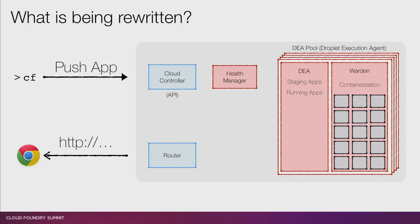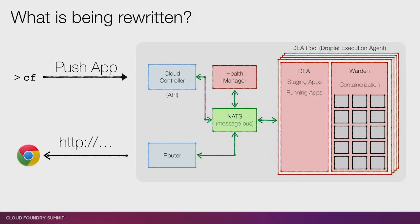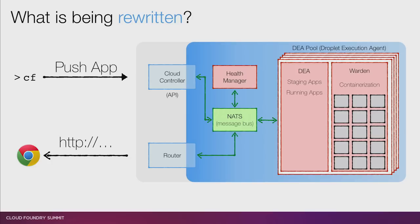Another component is the Health Manager. The Health Manager makes sure that what is desired — what the Cloud Controller says should be running — and what's actually running on the DEAs is in sync. So if an app goes missing, it's the Health Manager's responsibility to bring it back up. All of these components talk to each other using NATs, and this is what we're rewriting.